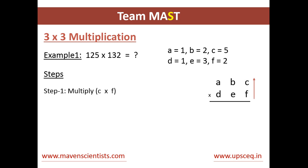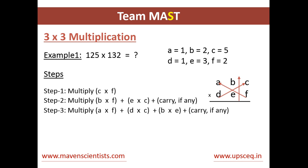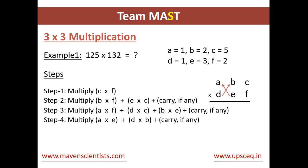The first step is we multiply C into F — it's the same as from the 2-into-2 multiplication method. Next, we multiply B into F and C into E, plus any carry from the previous step. Then we multiply A into F plus D into C plus B into E, and a carry if any. Next, we multiply A into E plus D into B, and a carry if any. In the final step, we just multiply A into D.